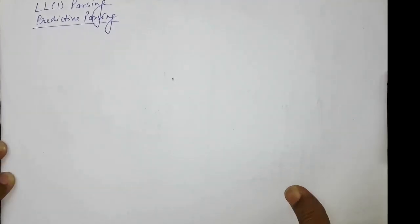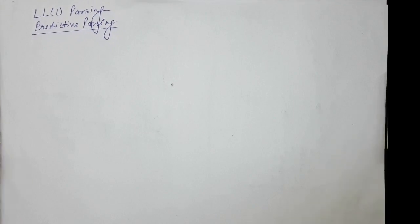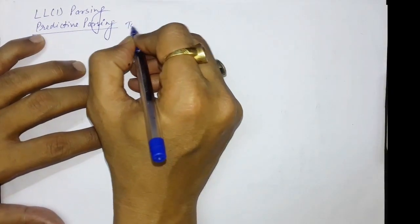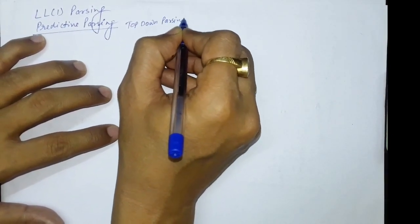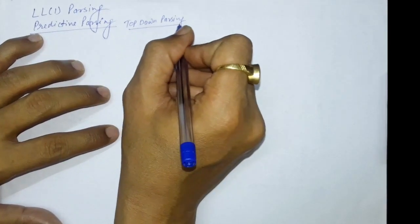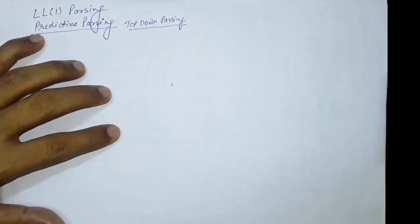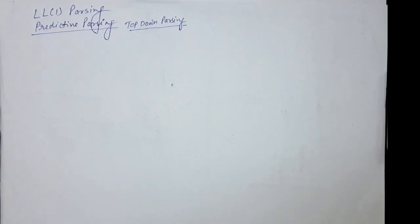In this lecture, we are going to discuss the LL1 parsing technique, which is also known as predictive parsing. Predictive means we are doing some kind of predictions. In LL1 parsing, which is also a top-down parsing technique, we are going to predict what is the next symbol for the derivation. We are using a concept of FOLLOW here — which is the next symbol that could appear while doing the derivation.